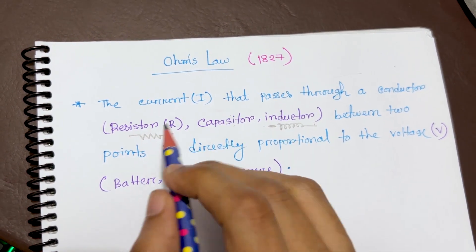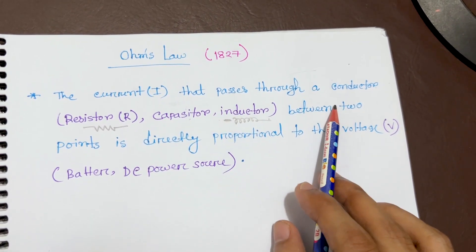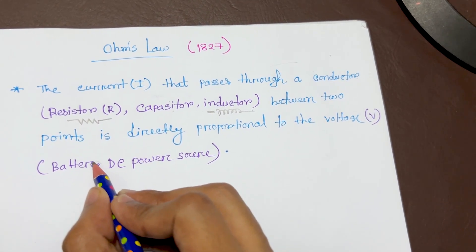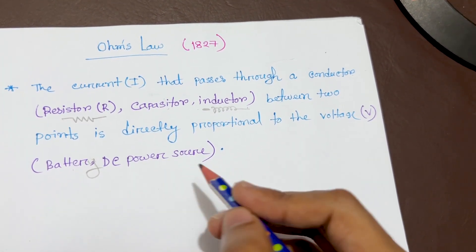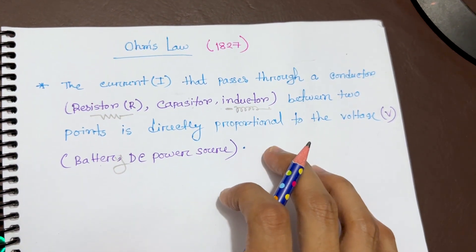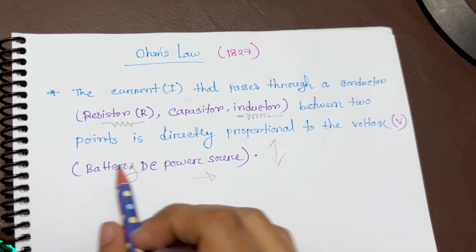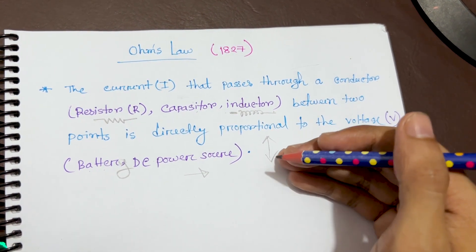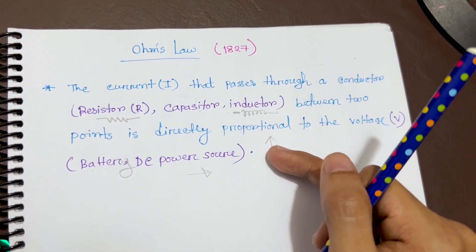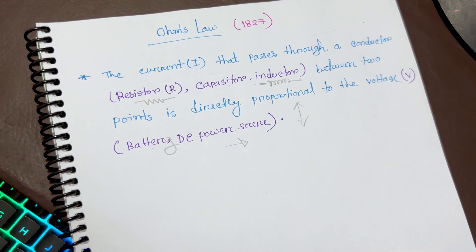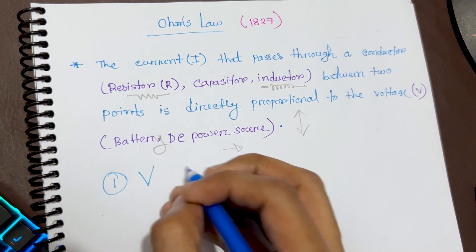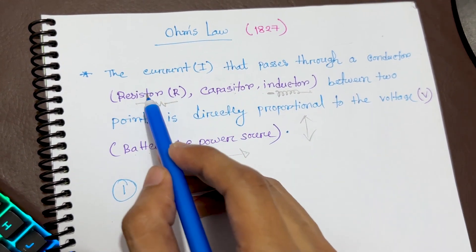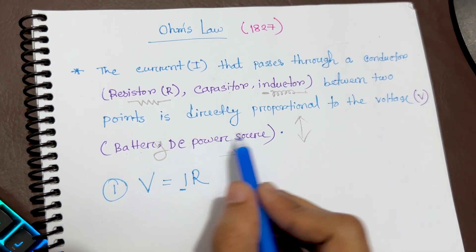The most important thing to understand is that the current passing through a conductor between two points is directly proportional to the voltage. The voltage source can be a battery or a DC power source — I'm not talking about AC here, as that is a completely different topic. So this is a DC power source. The main formula Ohm gives us is V equals IR, where I is the current flowing through the resistor or conductor, and V is the voltage or DC power supply.